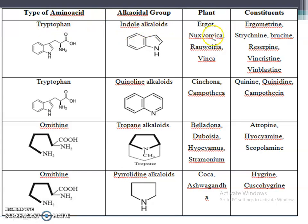You have to remember both the plant name and the phytoconstituents. For example, if asked which amino acid hyoscyamine is synthesized from: hyoscyamine is obtained from belladonna; belladonna comes under tropan alkaloids; tropan alkaloids derive from the amino acid ornithine. So the answer is ornithine.